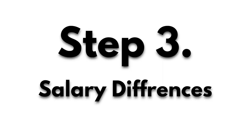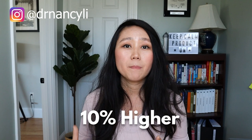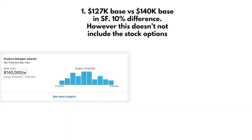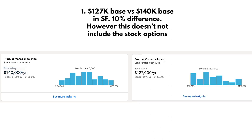Number three, let's talk about money. The salary difference between product owner and product manager is not huge but is very noticeable — product managers are generally paid about 10% higher than product owners, consistent with product owner being lower on the career ladder. For example, in the San Francisco area, the product manager base salary is about $140,000 per year, while the product owner base salary is about $127,000 per year. These figures do not include stock options or equity.